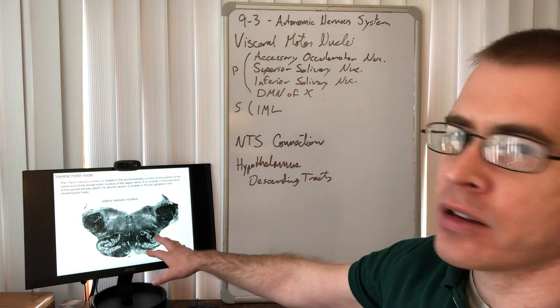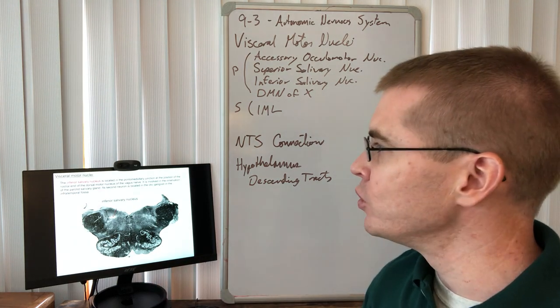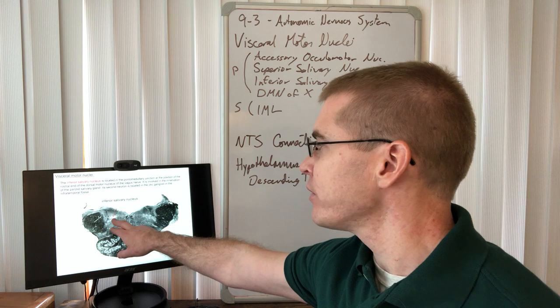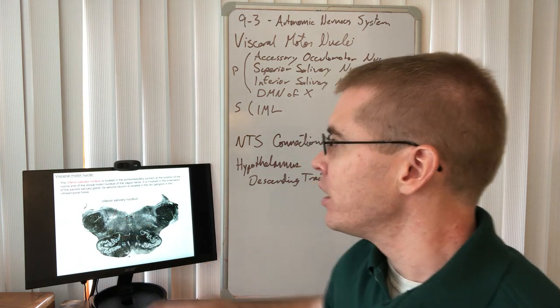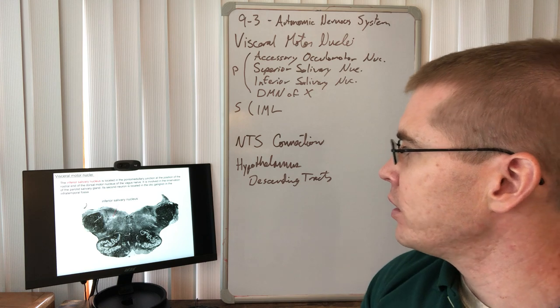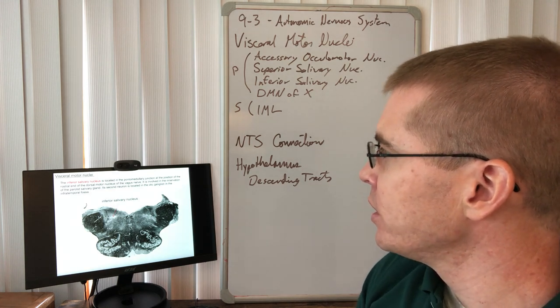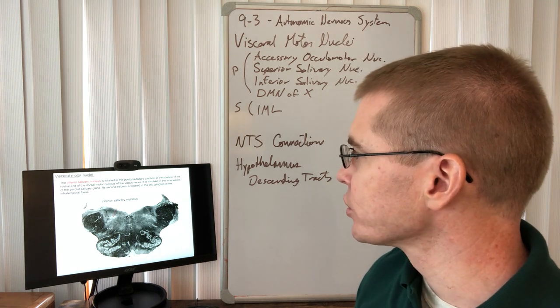Now we're moving down into the lower pons, where it joins with the medulla, and we can see the inferior salivary nucleus here, close to the trigeminal sensory nucleus and the dorsal motor nucleus.